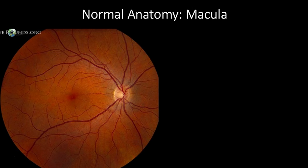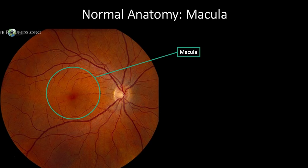The margins of the temporal vessels define our next area of interest: the macula. The macula is responsible for central, high-resolution color vision. Located in the center of the macula is the fovea, which is responsible for most of our visual acuity.